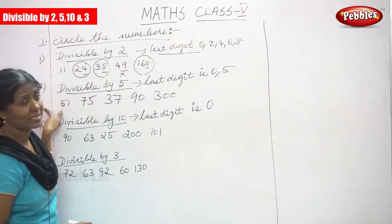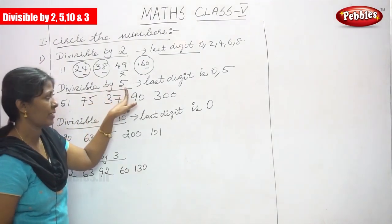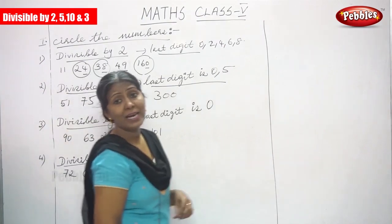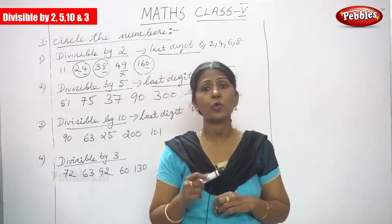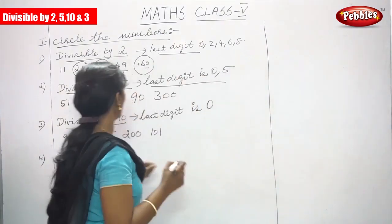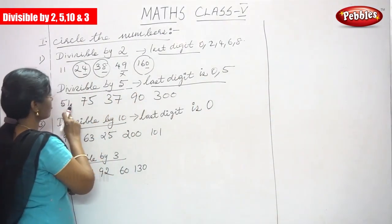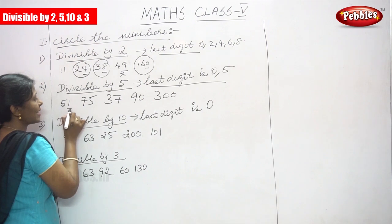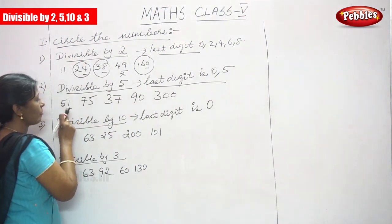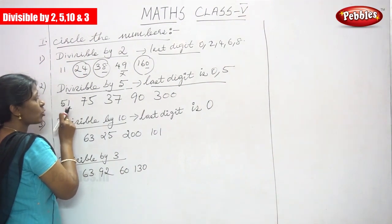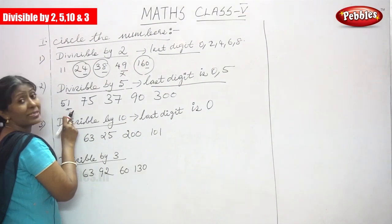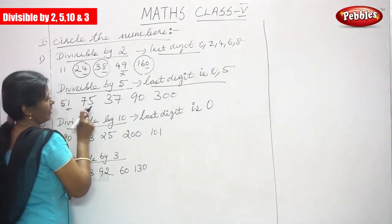Now moving to the next sum: divisible by 5. The rule is if the last digit ends with 0 or 5, the number is divisible by 5. Number 51: the last digit is 1, so it is not divisible by 5 because the last digit must end with 0 or 5.